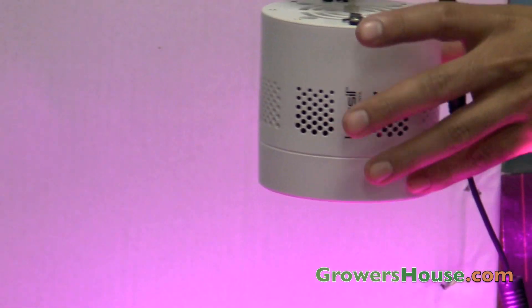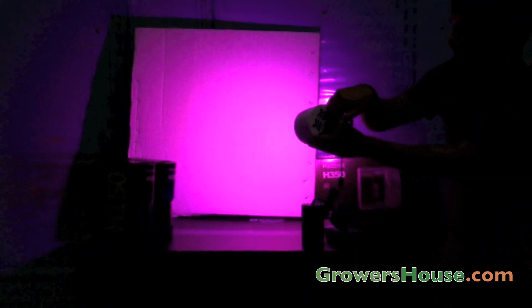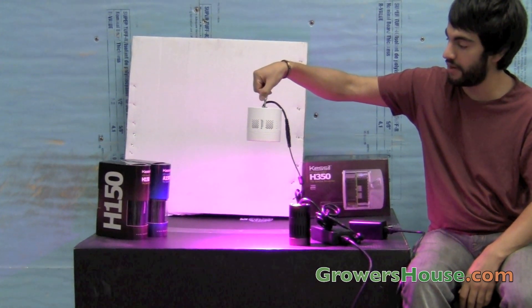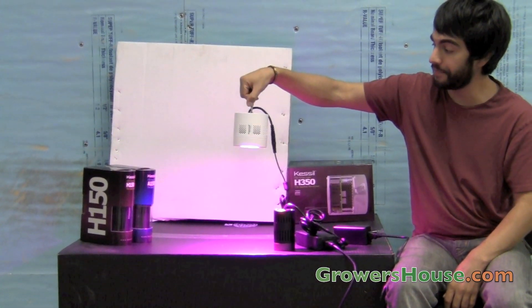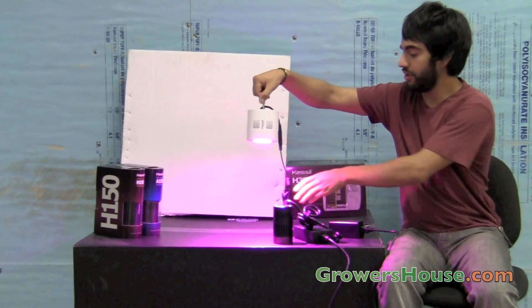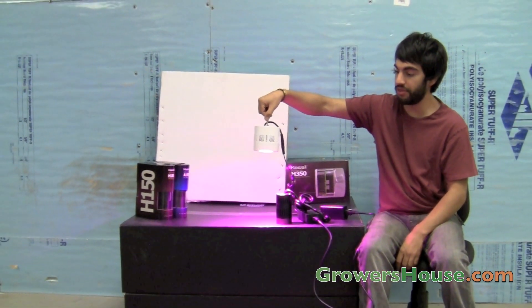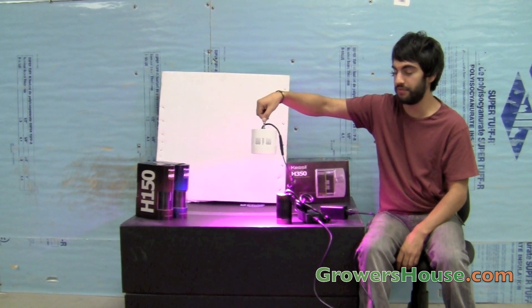Now this unit, if I hold it up, will give you a little bit more of a red spectrum than that one we just took a look at. And hanging this one about 12 to 24 inches above your plants, you really can expect to have about a, well, up towards the 24 inches, a three foot diameter is what's recommended for the growing footprint.